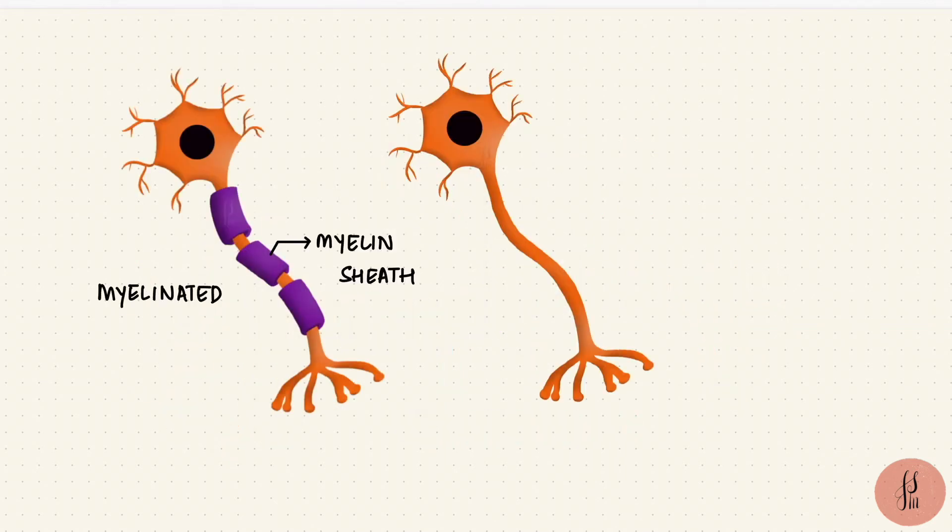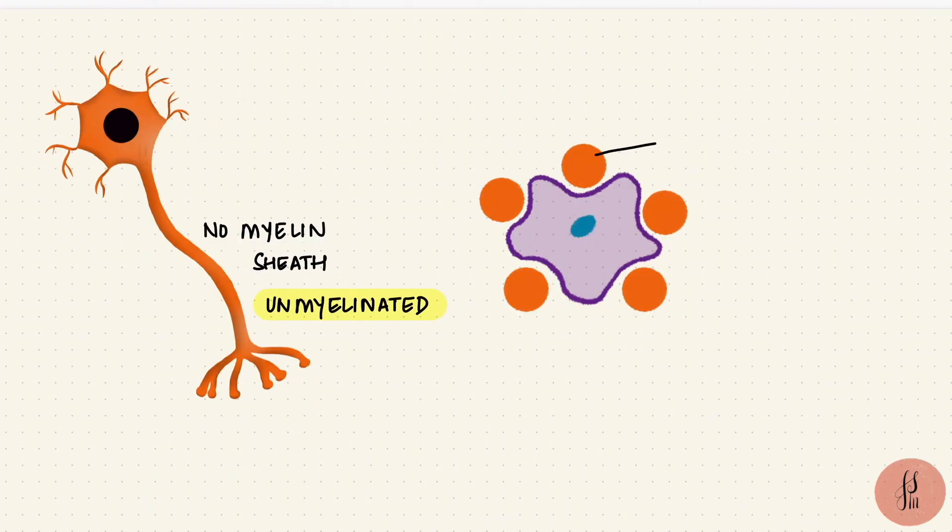Now this was a myelinated nerve, but axons without the myelin sheath are unmyelinated. Here multiple axons are related to a Schwann cell, but no mesaxon or winding happens so the process of myelination does not happen.